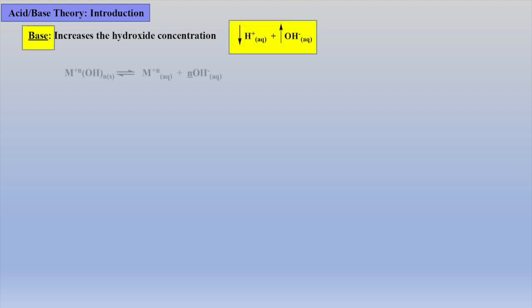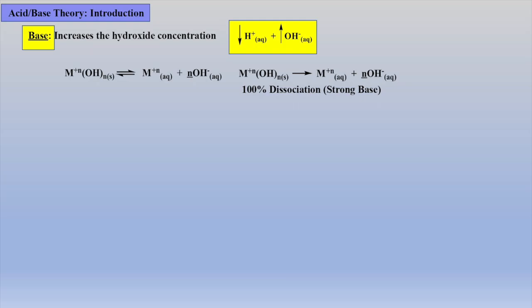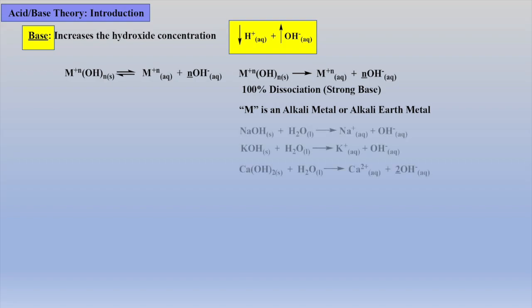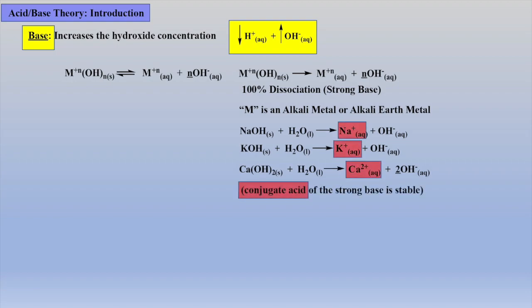Let's continue our introduction of a base, which as we mentioned earlier, is anything that increases the concentration of hydroxides. If we assume complete dissociation of the ionic compound MOH when dissolved in water, in other words, equilibrium will lie far to the right, then we can represent this by simply using an arrow to demonstrate 100% dissociation, which is our definition of a strong base. M can be an alkali metal or alkali earth metal. The most common strong bases are, for example, sodium hydroxide, potassium hydroxide, and calcium hydroxide, which completely dissociate, indicating that the conjugate acid of the strong base is stable and unreactive. Thus, the equilibrium will lie far to the right or completely dissociated.